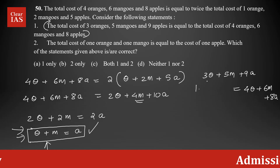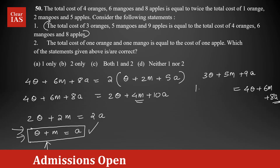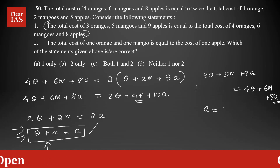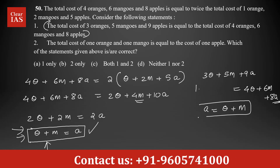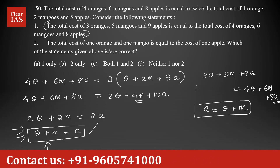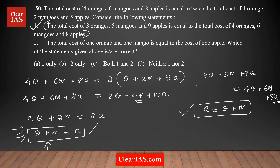Simplifying further, taking like terms to one side: 9A minus 8A gives A, equal to O plus 6M minus 5M which is M. So we're getting the same equation — orange plus mango equals the cost of an apple. Statement 1 is actually true because when you simplify Statement 1, you get the same equation we got from the question step. So we can confirm that Statement 1 is true.